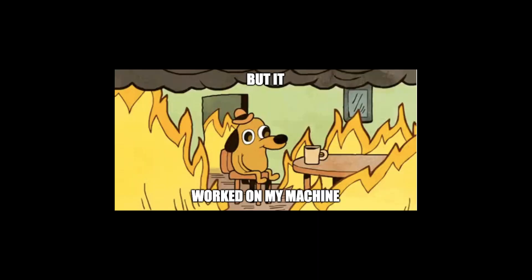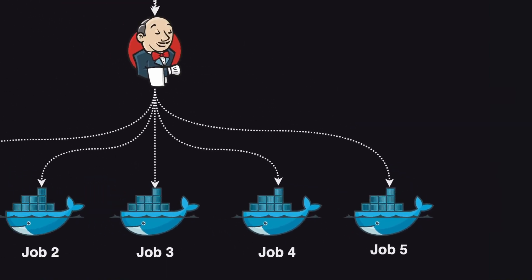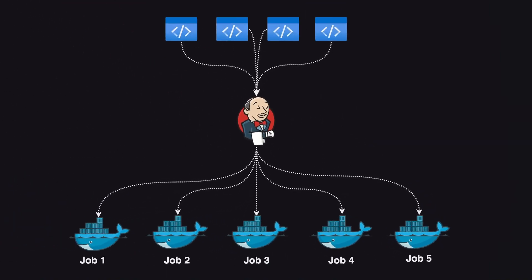So when do you use which? Use containers to deploy microservices — this ensures that what worked during development also works in the production infrastructure, and lets you deploy multiple services on the same machine for better resource utilization. Other workloads such as cron jobs, background workers, and internal tooling backends should also be deployed as containers. Containers are also very useful for CI/CD pipelines — all your build jobs can run as containers, and in fact all major CI/CD tools now support containerized jobs, with some only working with containers.